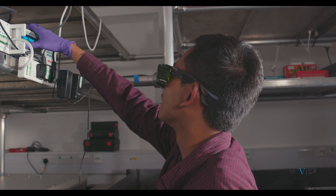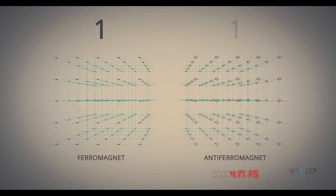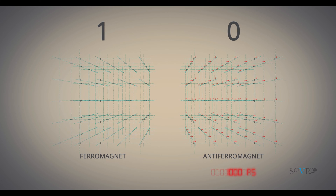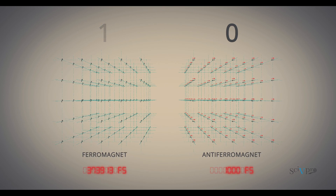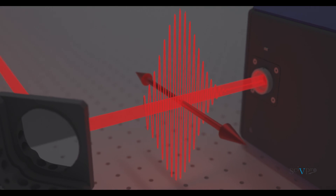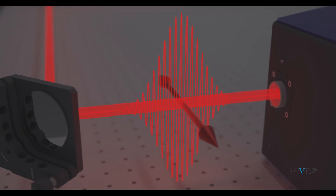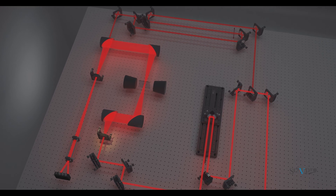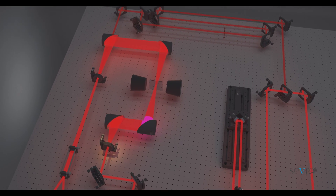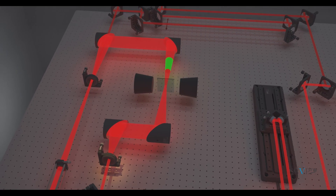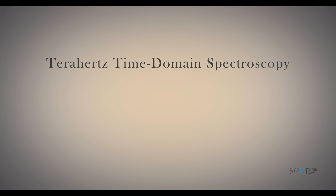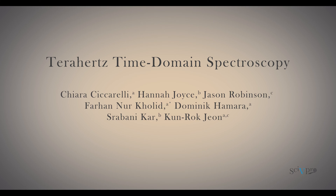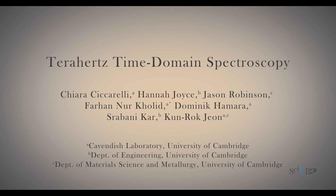Terahertz time domain spectroscopy has attracted attention from many scientific disciplines as it enables accessing the gap between electronic and optical techniques. One application is to probe spintronic dynamics in the sub-picosecond timescale. Here we discuss principles and technical aspects of a terahertz time domain spectroscopy set-up, and show an example of a measurement obtained from a cobalt-platinum thin-film calibrant, a well-studied spintronic structure emitting strong terahertz radiation.